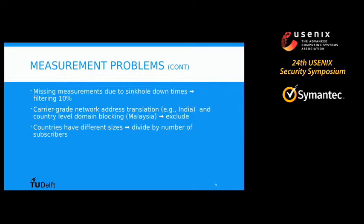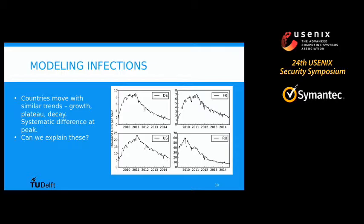Other issues include missing measurements due to sinkhole downtimes — we filter about 10% of the points for that. With regards to the effects of NAT on these kinds of measurements, major problems are caused by carrier-grade NATs; we detected these for a number of countries like India and removed them from the dataset. Another issue is that countries have different sizes — obviously the number of infected machines with Conficker in the US is going to be much higher than in the Netherlands, and that in itself is not an interesting point of comparison. What is actually interesting is an infection rate. For this reason, we divide the counts by the number of subscribers in the countries.